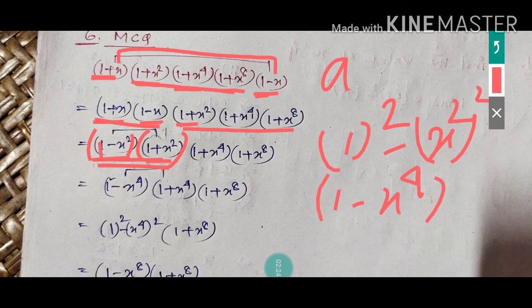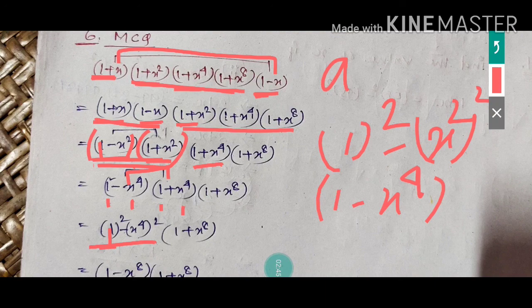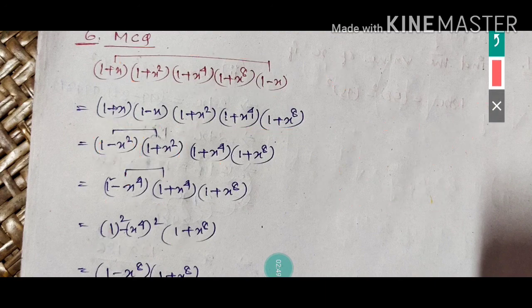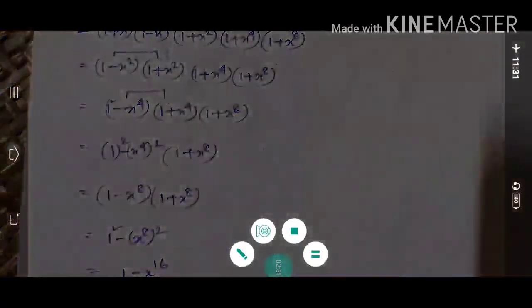Beside that result, (1+x⁴) is already there. So for these two terms I can apply the formula again: a minus b times a plus b gives a squared minus b squared. Here a squared is 1 squared and b squared is x⁴ squared, so that gives 1 minus x to the power eight. And (1+x⁸) is already there in the expression.